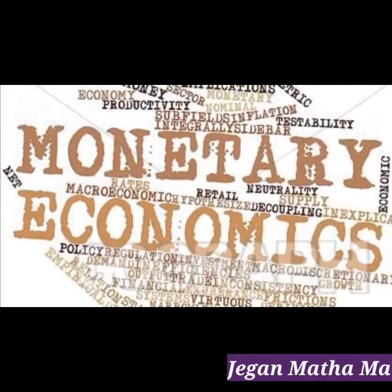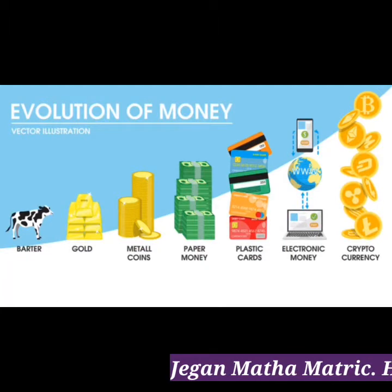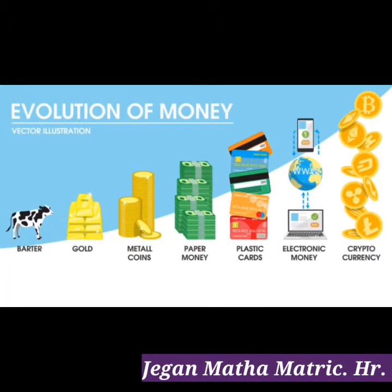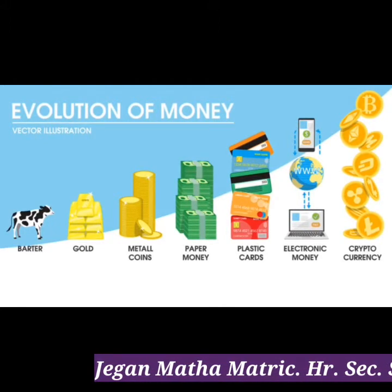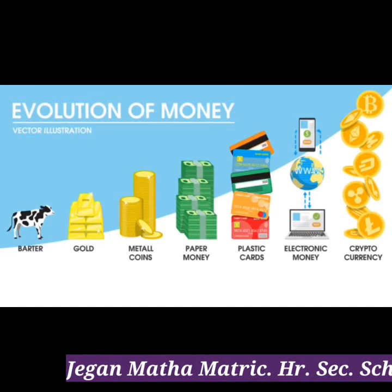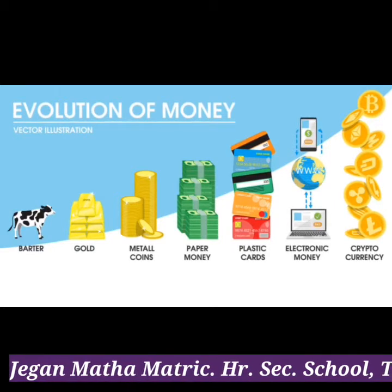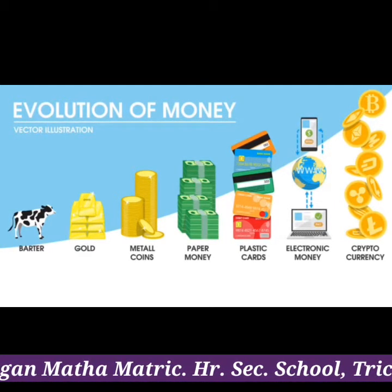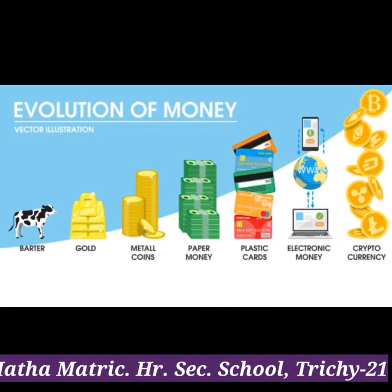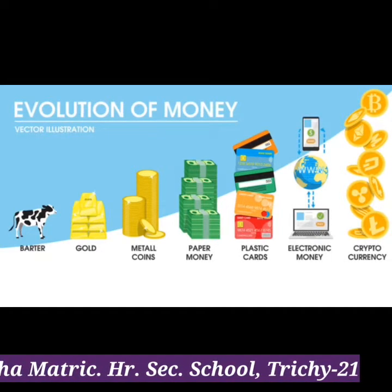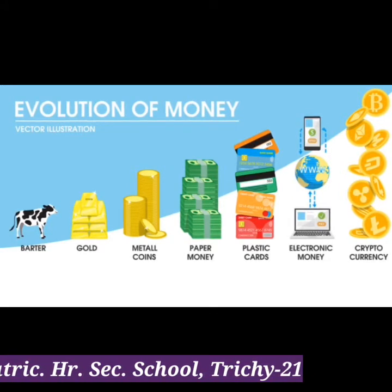Money has evolved through different stages according to time, place and circumstances. We have learnt the meaning of Monetary Economics and the importance of money and the first stage of the evolution of money. Some of the major stages through which money has evolved are commodity money, barter system, metallic money, gold and silver standard, paper currency, credit money, and plastic money.